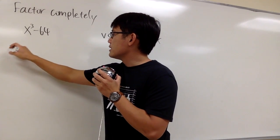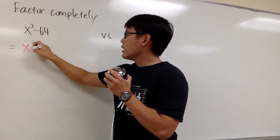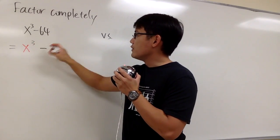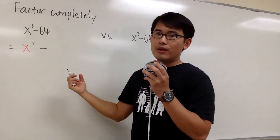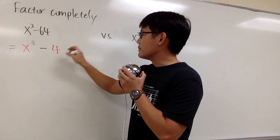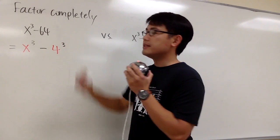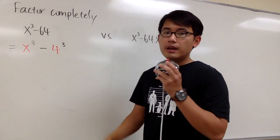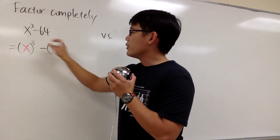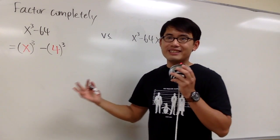So first we'll look at this as x to the third power, and then for the 64, we're going to think about what times what times what gives us 64 — the answer is 4. 4 times 4 times 4 gives us 64, which means 4 to the third power equals 64. So as you can see, this is a difference of two cubes, and we factor it using the formula.